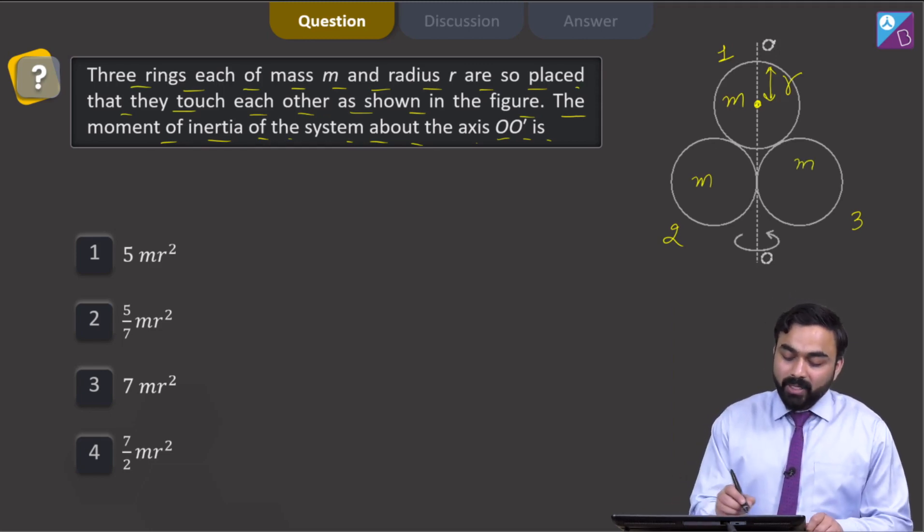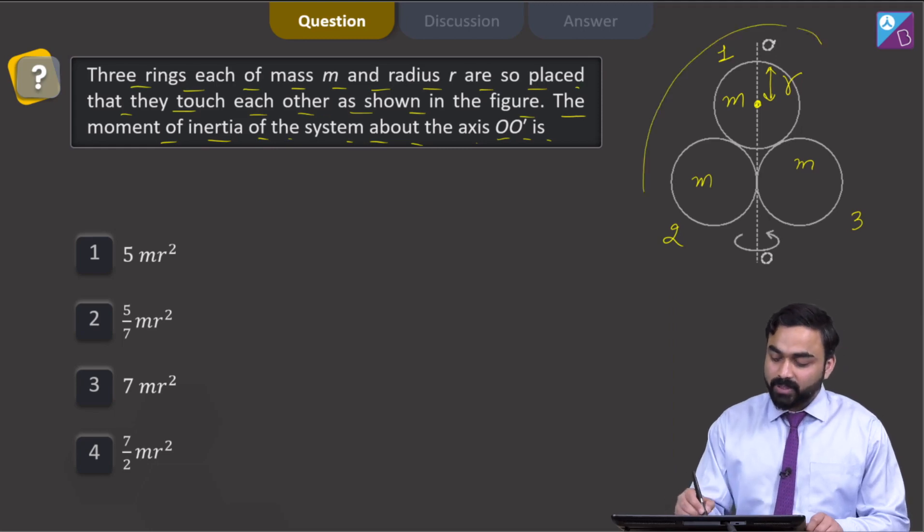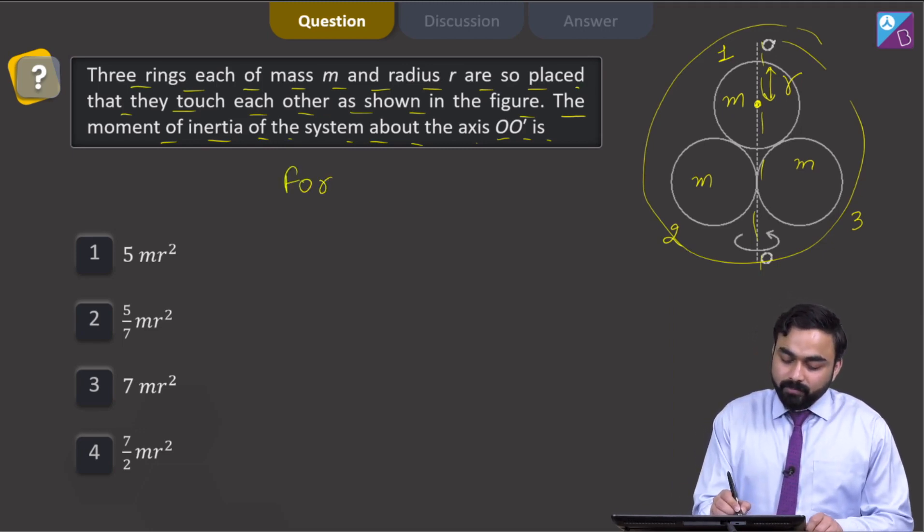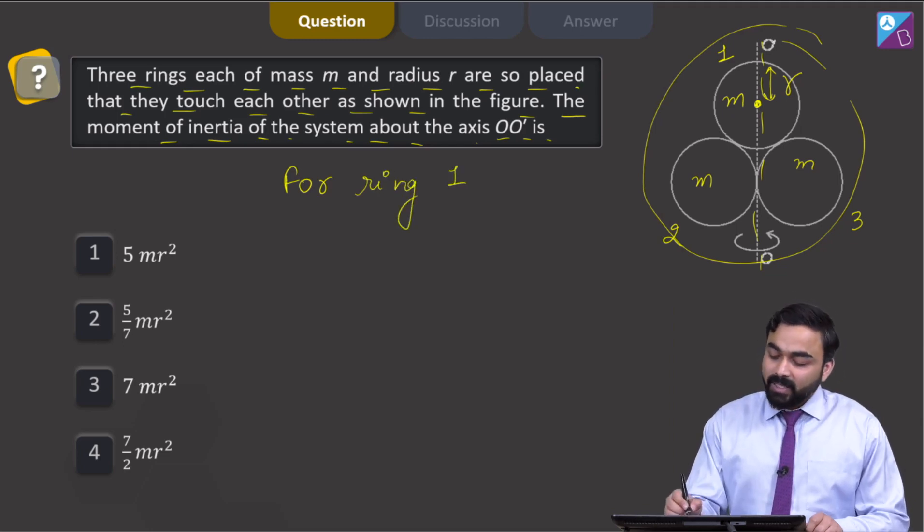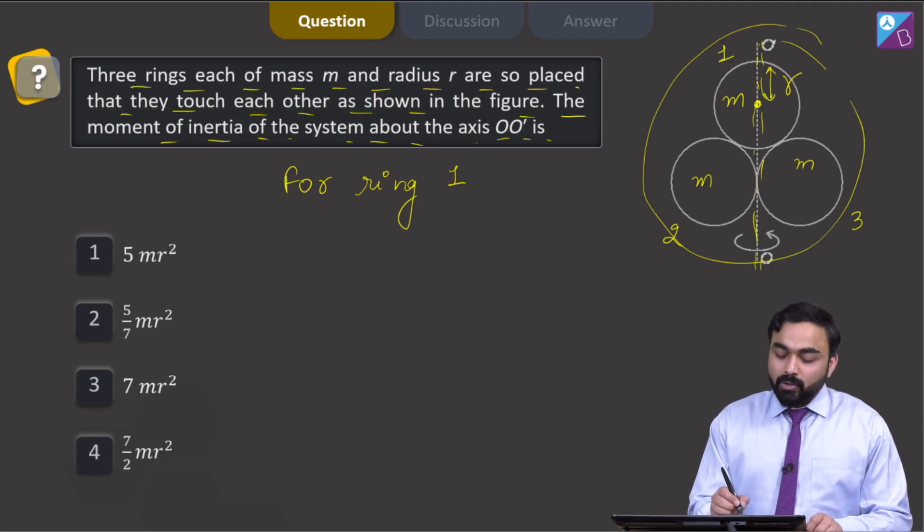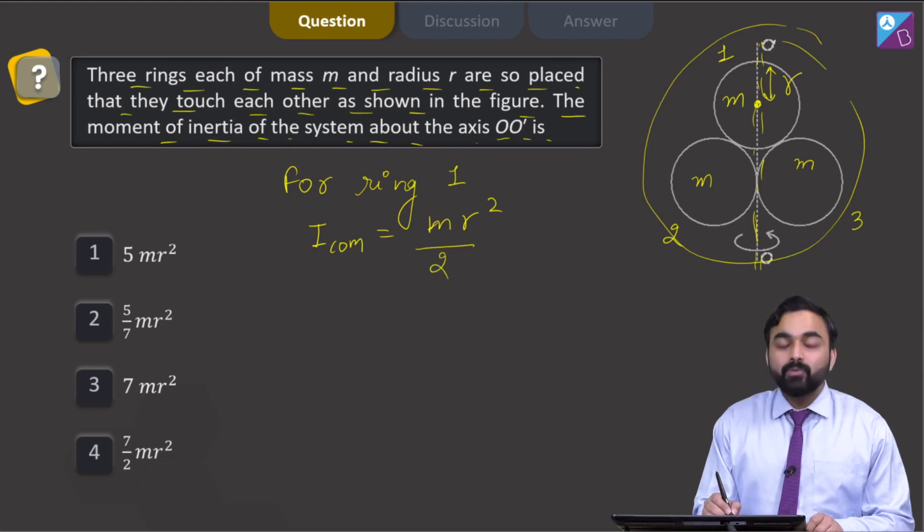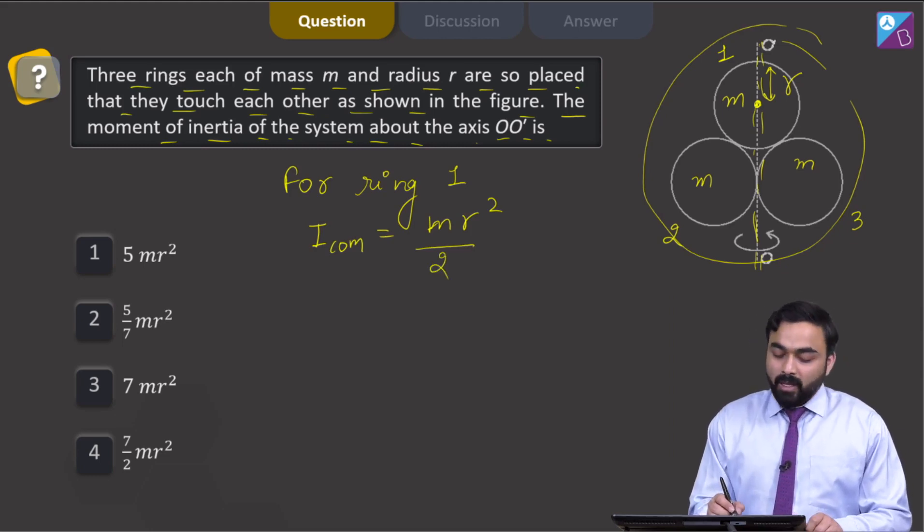I need to calculate the moment of inertia of this complete system about an axis passing through OO'. For ring number 1, you can see that the axis is passing through the center of the ring. So, the moment of inertia of the ring about its center of mass is given by mr²/2.